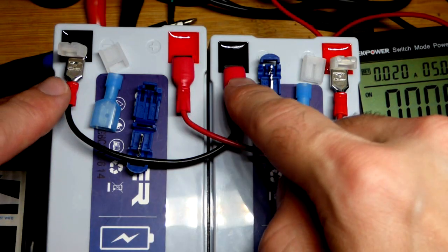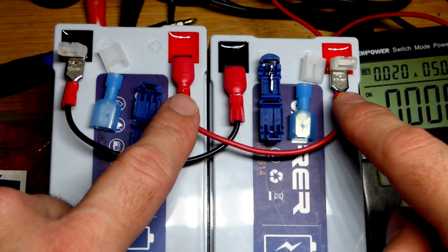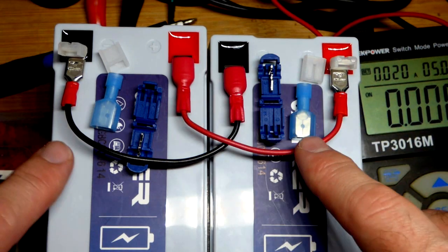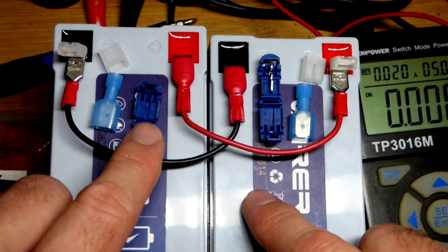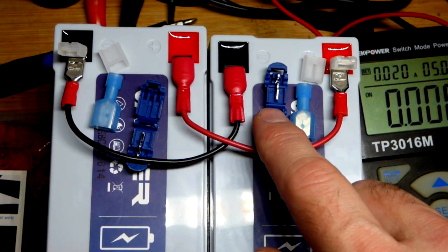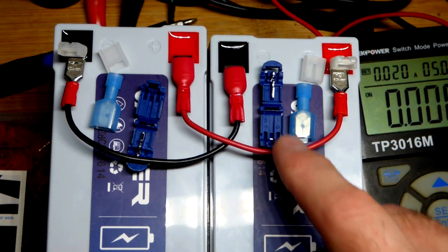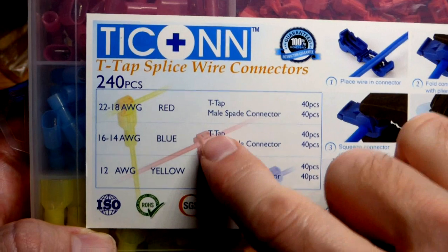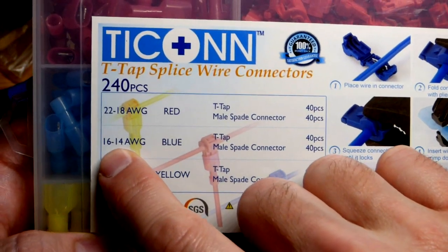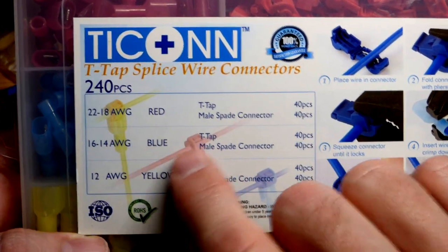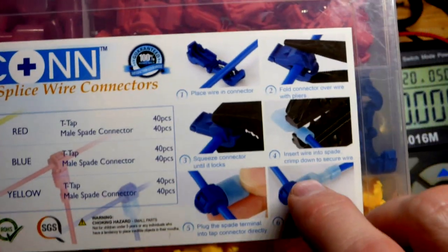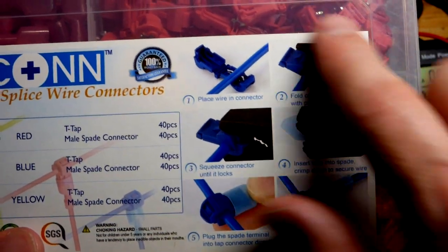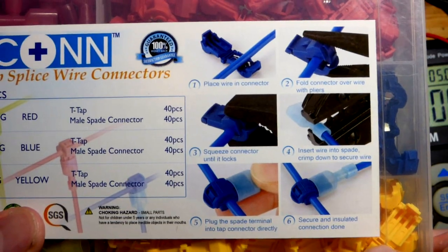So now in the last video, I put together these two jumpers so I could connect the batteries in parallel. My main goal is to connect these two T-Tap splice wire connectors to these wires. This is the kit I'm using, 16 gauge wire, so I'm going to use the blue ones. They give you pretty good instructions right on the container.